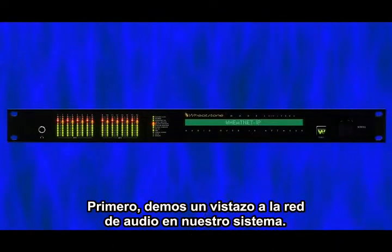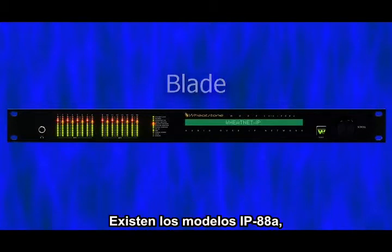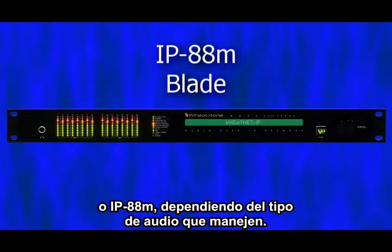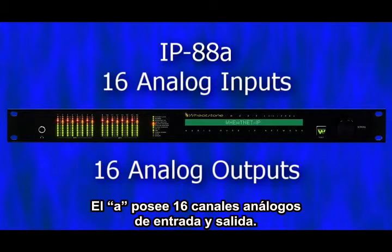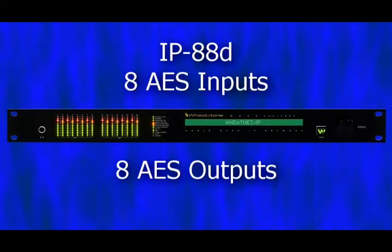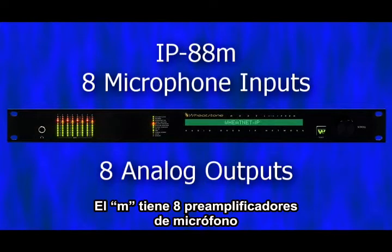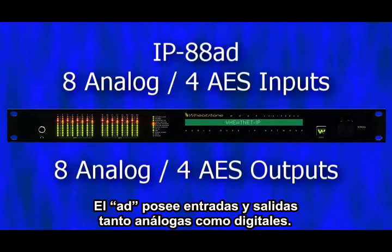Let's look at the audio network part of the system first. The blades are the basic building block of the network. Their model numbers are IP88A, IP88D, IP88AD, or IP88M depending on the type of audio they handle. The A has 16 analog input and output channels. The D has 8 AES ins and outs. The M has 8 high quality mic pres and 8 analog line outs. The AD is half analog and half digital in and out.